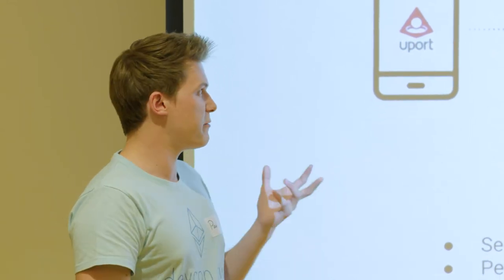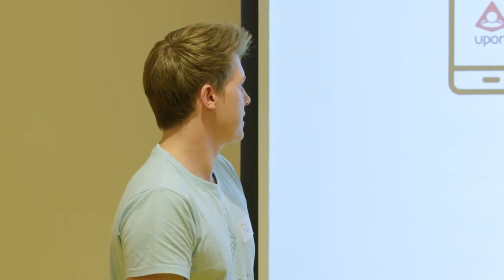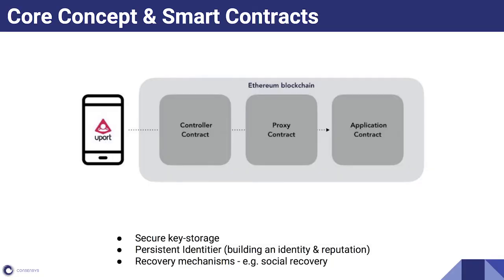If you want the identity to remain permanent, what happens if the user loses his phone? Then his private keys are gone. That's where the controller contract comes in — it has a social recovery mechanism. You set a social recovery network the same way you could with Facebook: choose your parents, a close friend, employer, or bank — whoever you trust to recover your identity. If you lose your phone, you can say 'hey guys, I've lost access to my phone, can you help me recover my identity?' and your core network confirms your identity. Because Ethereum is so young and constantly evolving, we want this part to be as interchangeable as possible.